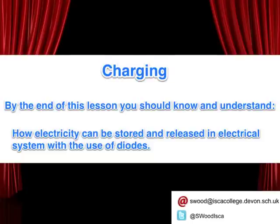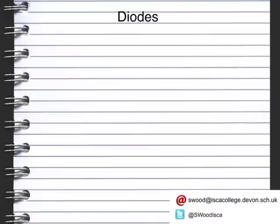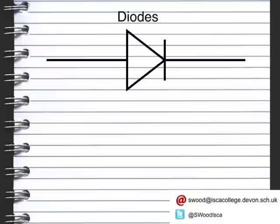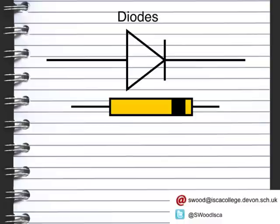Let's have a look at our objectives for today's lesson on charging. By the end of this lesson you should know and understand how electricity can be stored and released in electrical systems with the use of diodes. This is the symbol for a diode, and this is what an electrical appliance might look like — what you might see on a circuit board — and this is the electrical symbol for a diode.